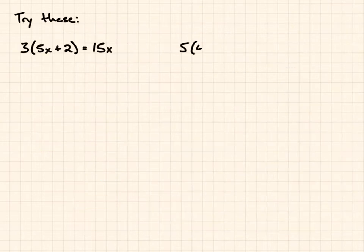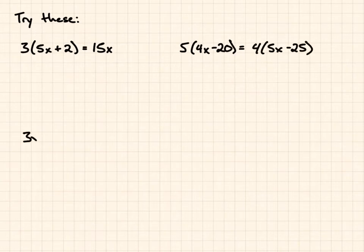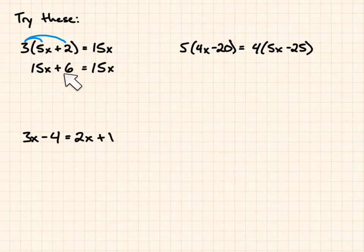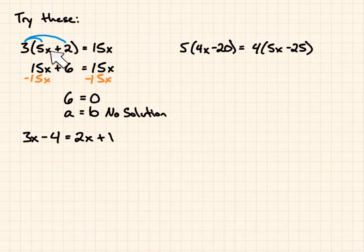So, let's try some examples, and I put one of each in here. So, for our first one, we use the distributive property. 3 times 5x gives me 15x. 3 times 2 gives me 6. And then, we subtract 15x from both sides, and we end up with 6 equals 0. 6 cannot equal 0. So, what is the case here is, this is a equals b. This is no solution. No matter what value you put in for x, this is going to be false. It's just not going to work.